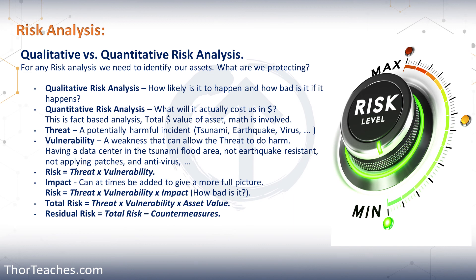Let's finish these definitions. Total risk is the potential risk times the vulnerability and times the asset value. And then finally, residual risk is the total risk minus our countermeasures. Just because we have mitigated something doesn't mean we're done — if the residual risk is still too high, we keep going.